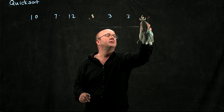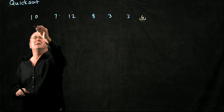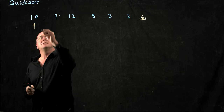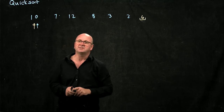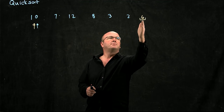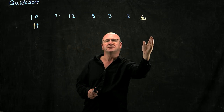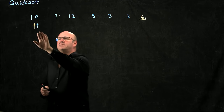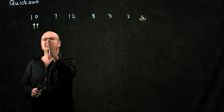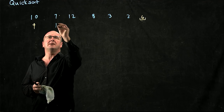Now we take two counters and start at the beginning of the list. One counter remembers where our last swap position is, and one counter that we increment through the list. Our pivot point is 6, so we're trying to move anything smaller than 6 to the left and anything larger to the right. We start with our two pointers and ask: is 10 smaller or larger than 6? 10 is larger than 6, so we increment one counter and leave the other where it is. This one remembers the first thing that's larger than our pivot point.